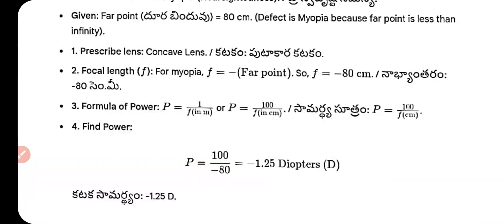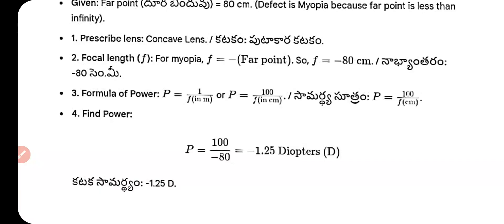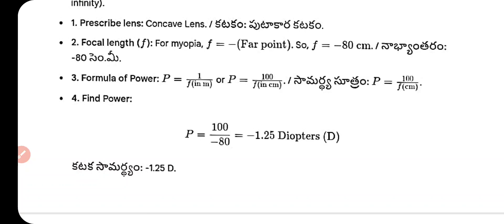Numerical on myopia — Far point: 80 cm. Prescribed lens: concave lens. Focal length: f = −80 cm. Power formula: P = 100/f (in cm). P = 100/(−80) = −1.25 diopters.